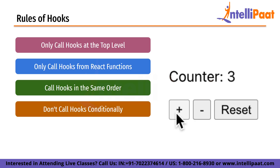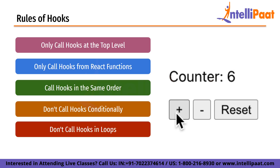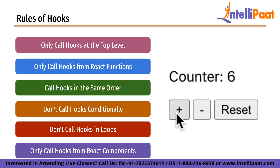Fourth, don't call hooks conditionally — you should not call hooks inside an if statement because this can cause the order of hooks to change between renders. Fifth, don't call hooks in loops such as for or while loops, because this can also cause the order of hooks to change between renders. Finally, only call hooks from React components such as functional components or custom hooks, not from regular JavaScript functions. By following these rules you can ensure that your React components work correctly and that your hooks maintain state correctly between renders.